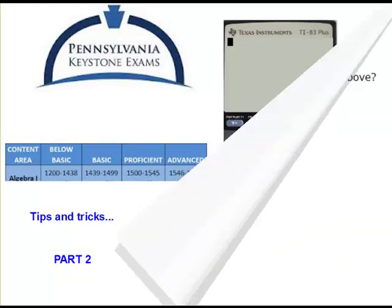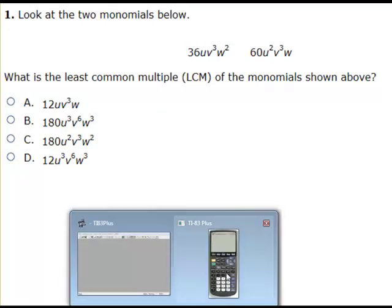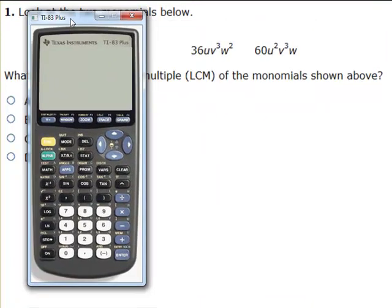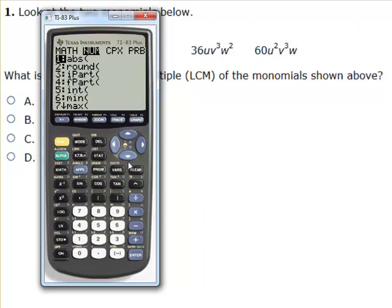Here we have a problem involving the least common multiple. We need to find the least common multiple of 36 and 60. You could do this on paper, or you can ask the calculator to find the least common multiple of 36 and 60. To do that, you hit the math key, go to the second column — it's going to be option 8, the least common multiple.